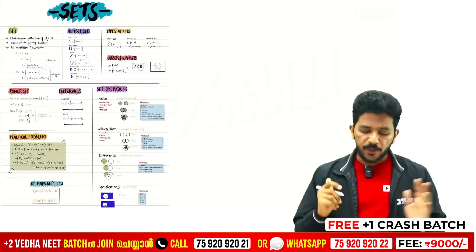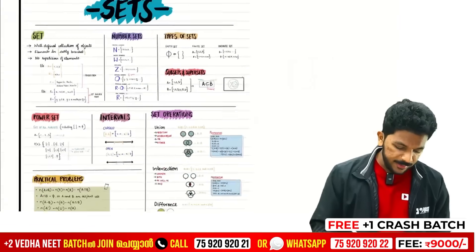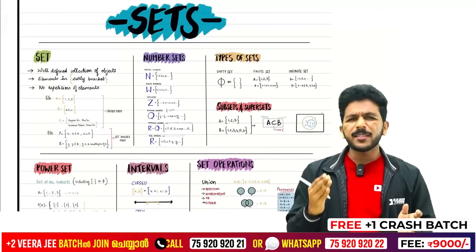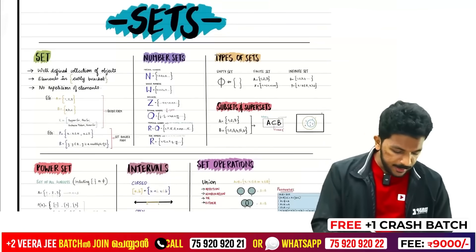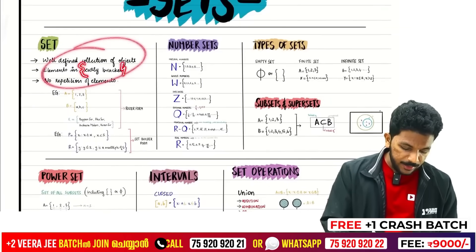First of all, there are full clarity notes. So let's start. Set — set is a very simple chapter. Set is a definition represented with curly brackets.